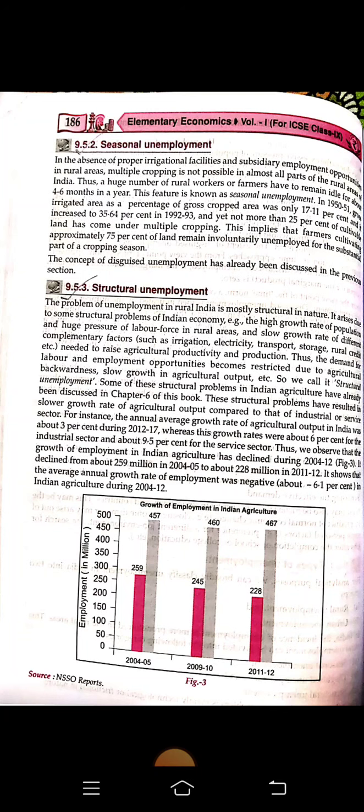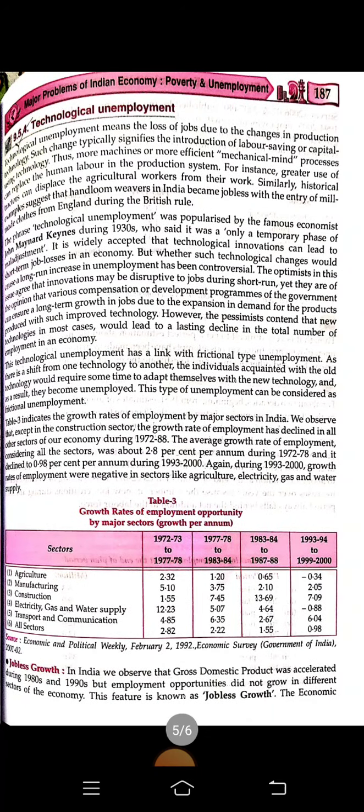Technical unemployment means the loss of jobs due to changes in production technology. Such changes typically involve the introduction of labor-saving or capital-using technology, where more efficient mechanical processes replace human labor. For instance, greater use of tractors can displace agricultural workers. Historically, handloom weavers in India became jobless when mill-made clothes from England entered during British rule.